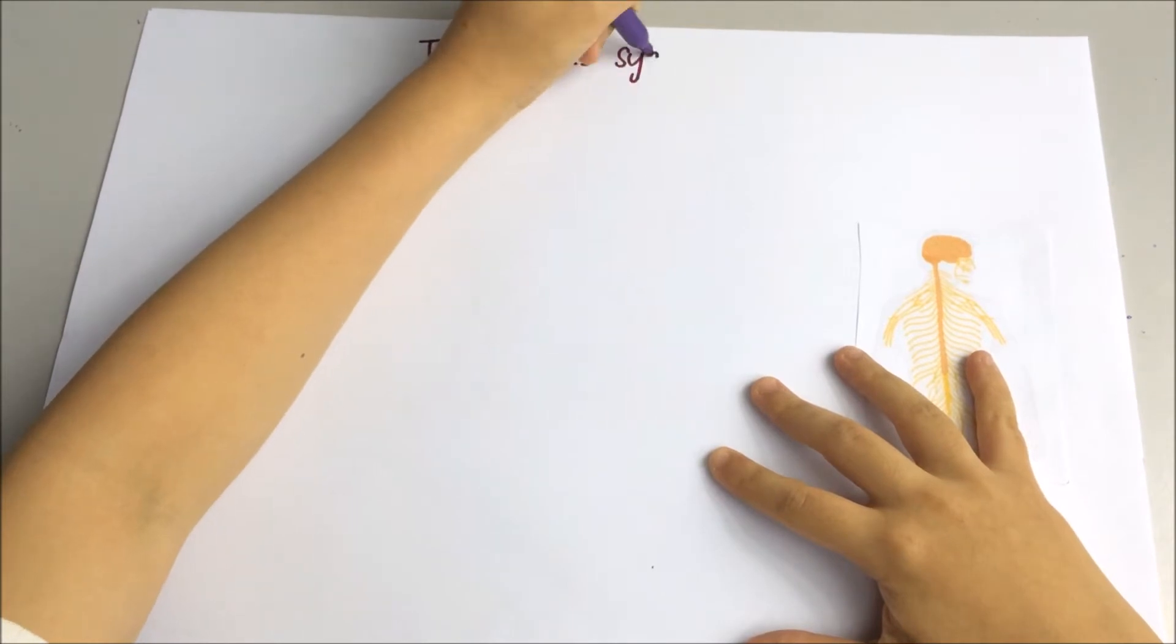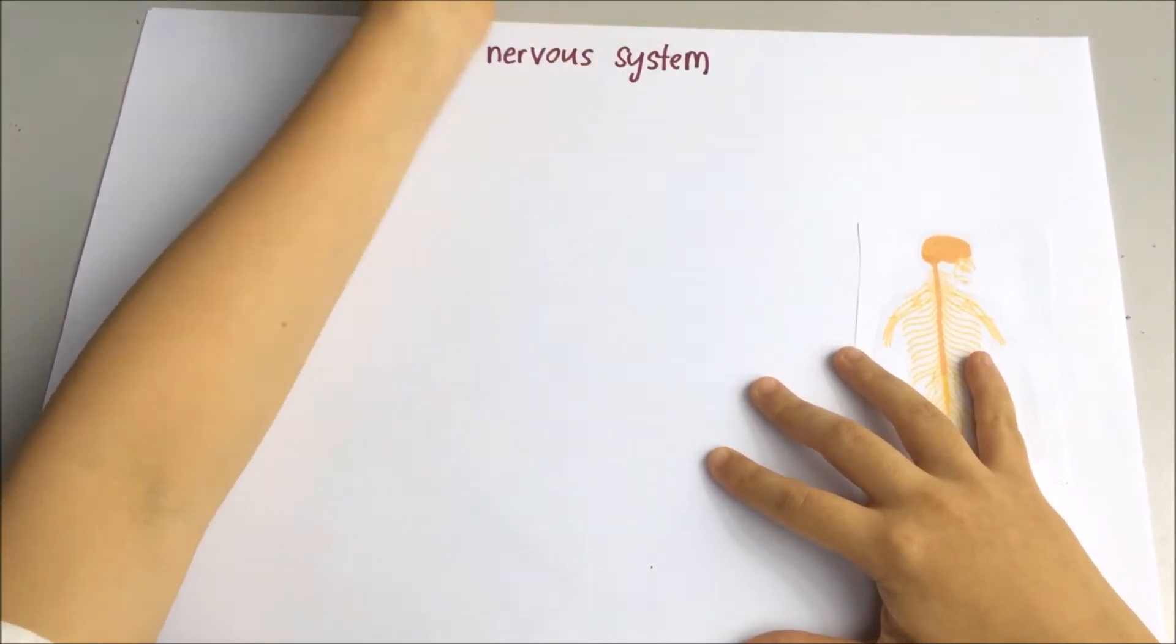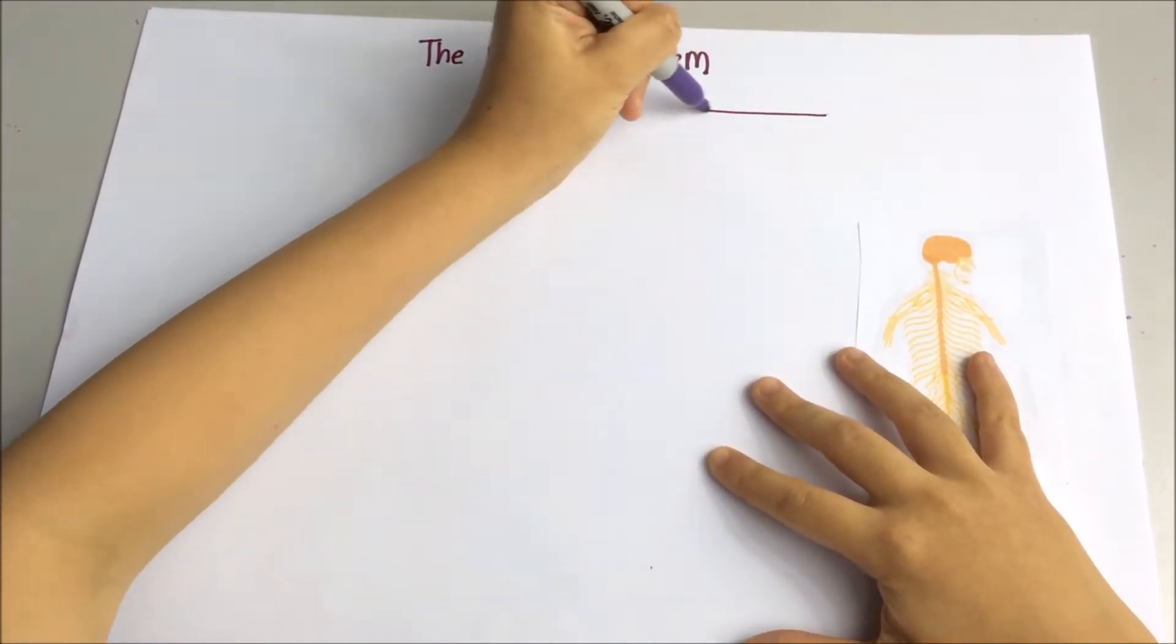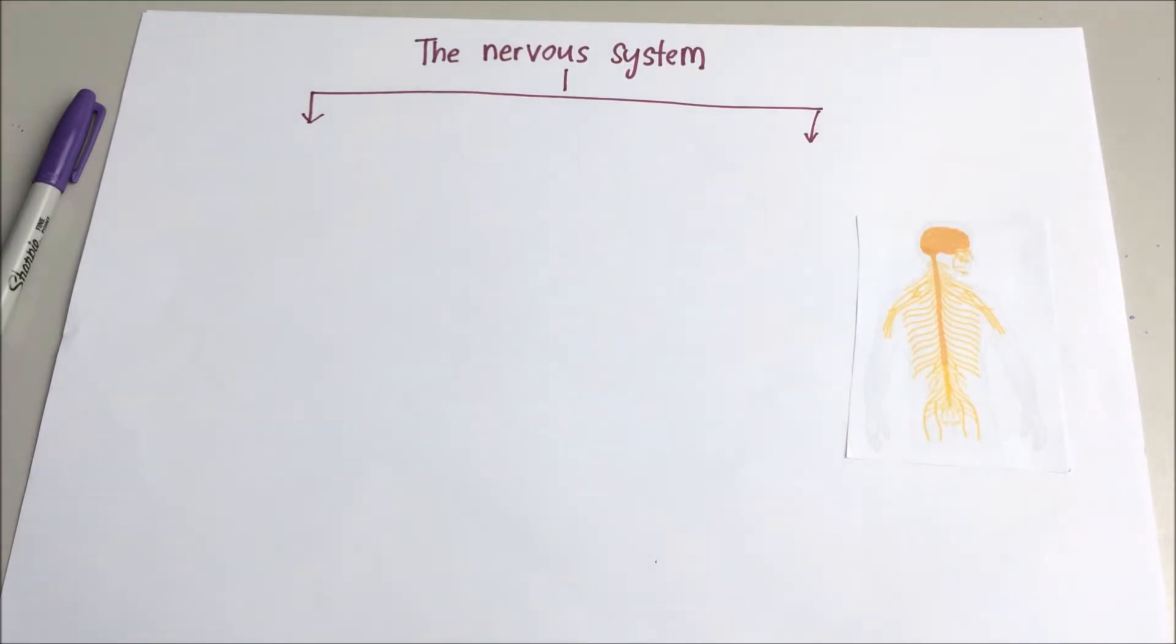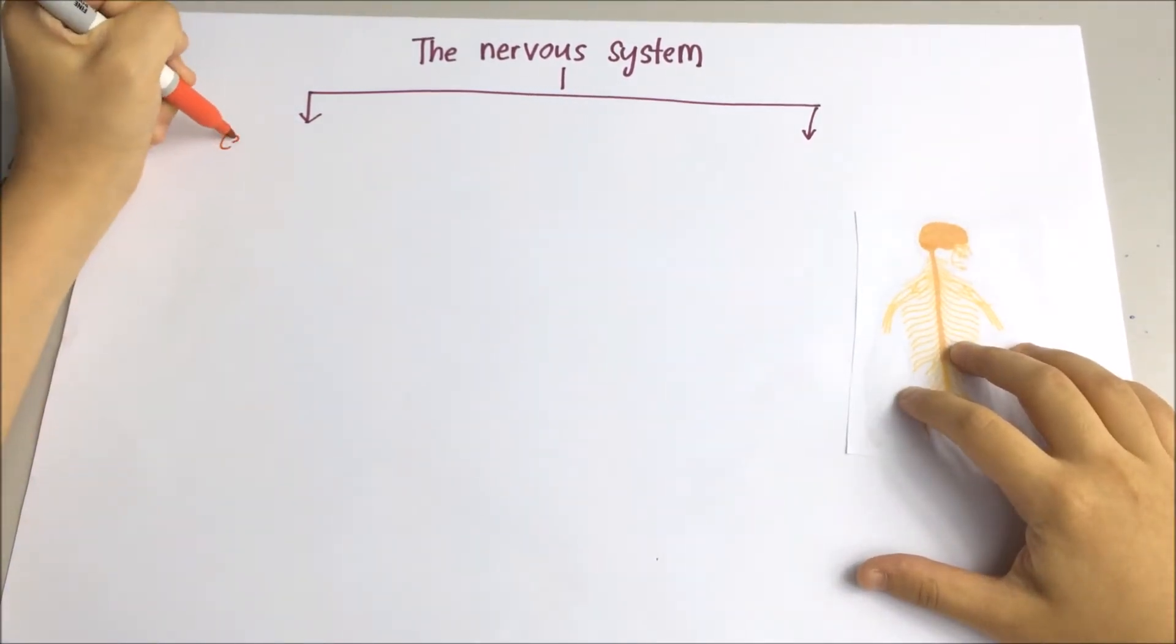It is actually the control center of your body. It interprets the things that your body senses and also sends information to the muscles and glands, telling them what to do. Nervous system can be divided into two parts.